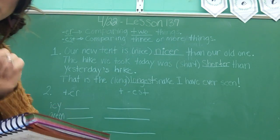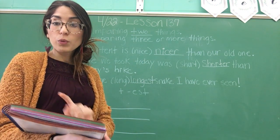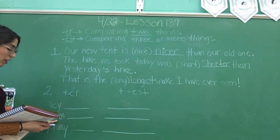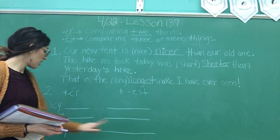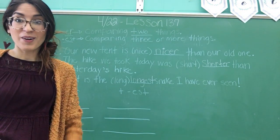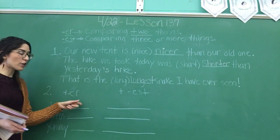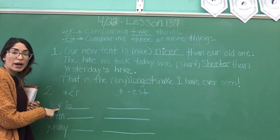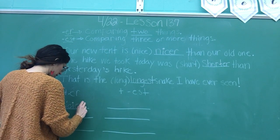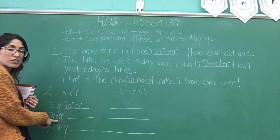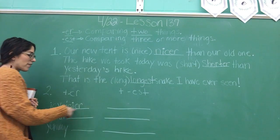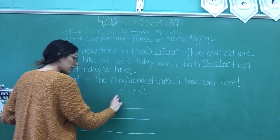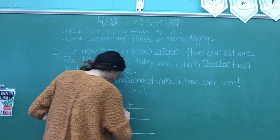The last sentence I couldn't fit, so you'll do that on your own. Then number two: add the suffixes to the root words. We have 'icy,' 'green,' and 'yummy.' We're going to add ER and then EST to those words. So icier — we have to change the Y to an I and add ER. Then iciest — change the Y to an I and add E-S-T. Very good. Iciest.